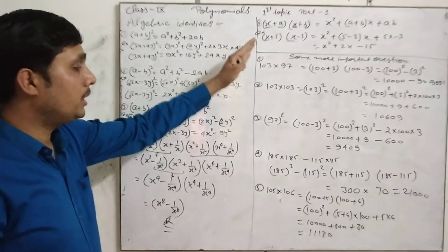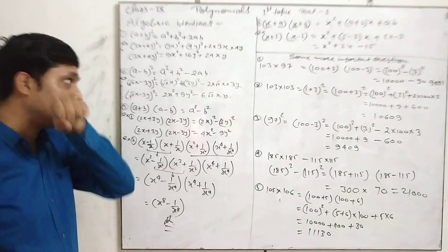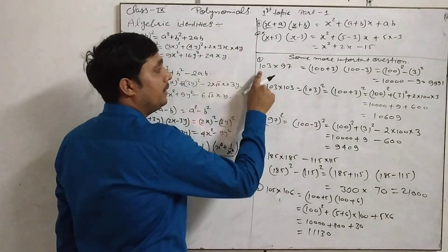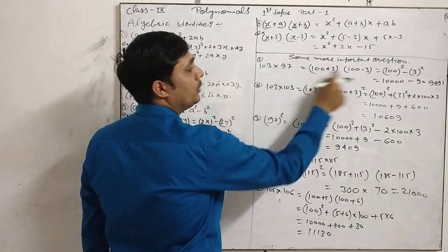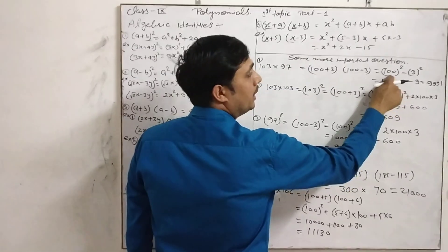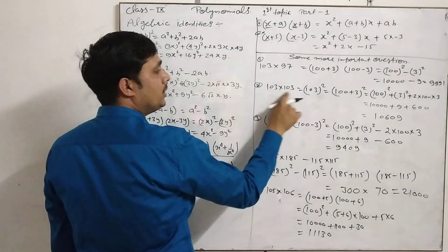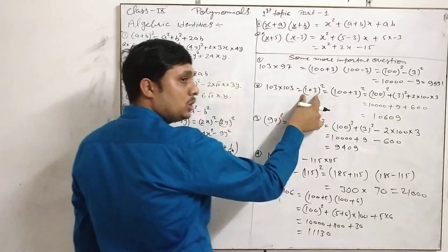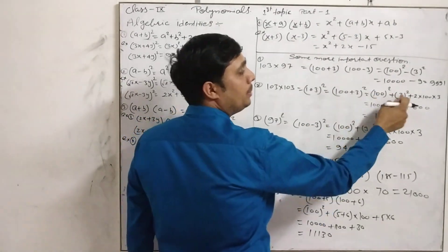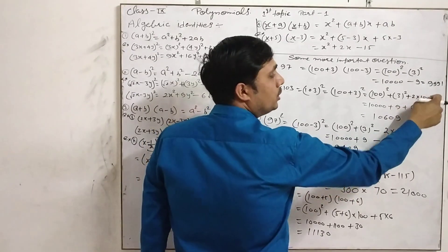Now we use these identities in mathematics for easy and short calculations. For example, to multiply 103 by 97: write 103 as (100 + 3) and 97 as (100 − 3). This becomes (a + b)(a − b) = a² − b² = 10,000 − 9 = 9,991. Again, 103 squared: (100 + 3)² = a² + 2ab + b² = 10,000 + 600 + 9 = 10,609.